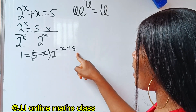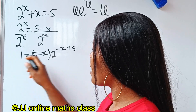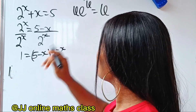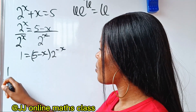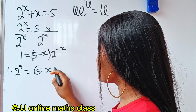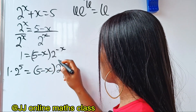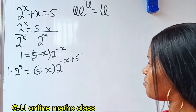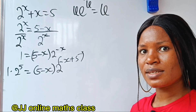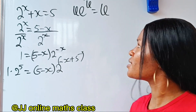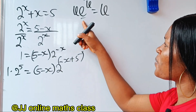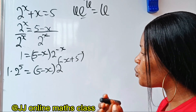So I will write 1 × 2^5, which is 32, equals (5 minus x) × 2^(5 minus x). Now we have the right structure — but the problem is we have base 2 here, and what we need is base e. We are not supposed to have 2; we need e.